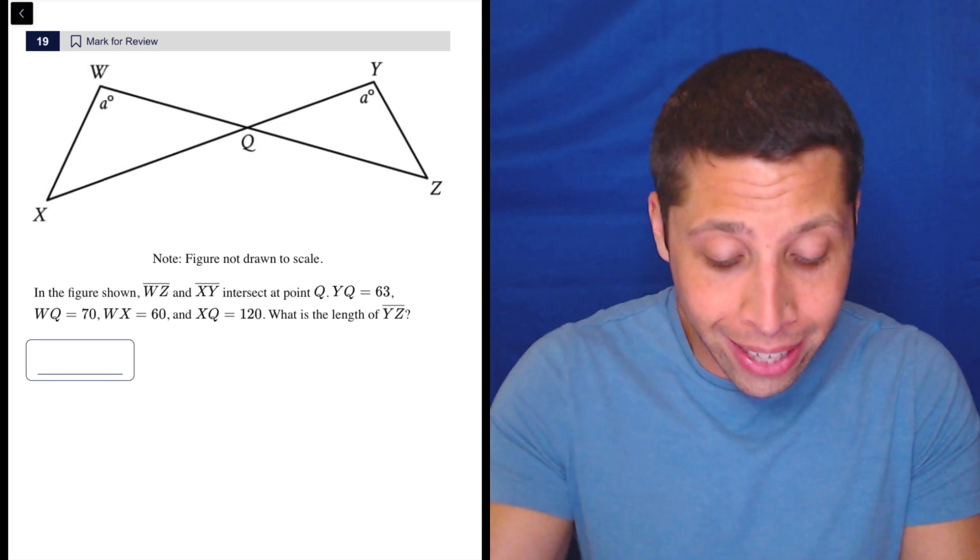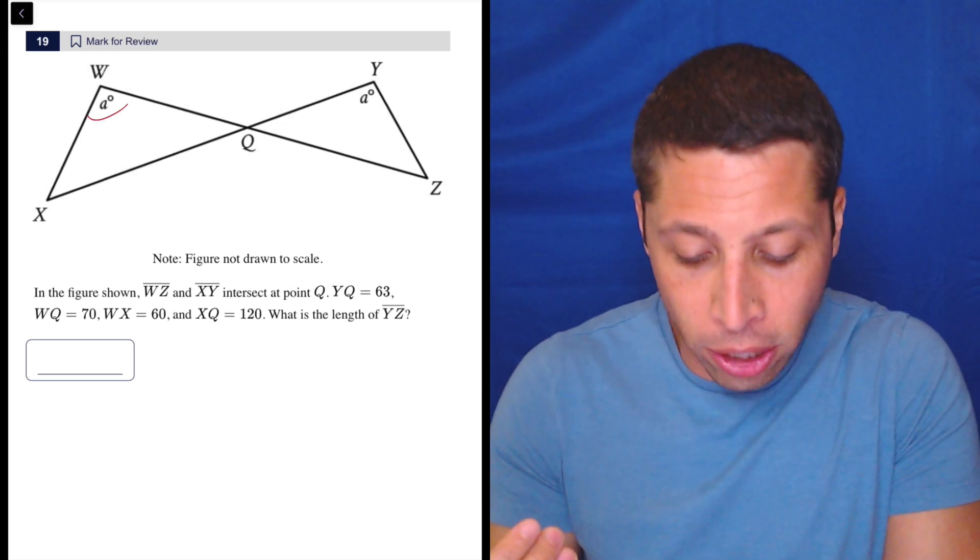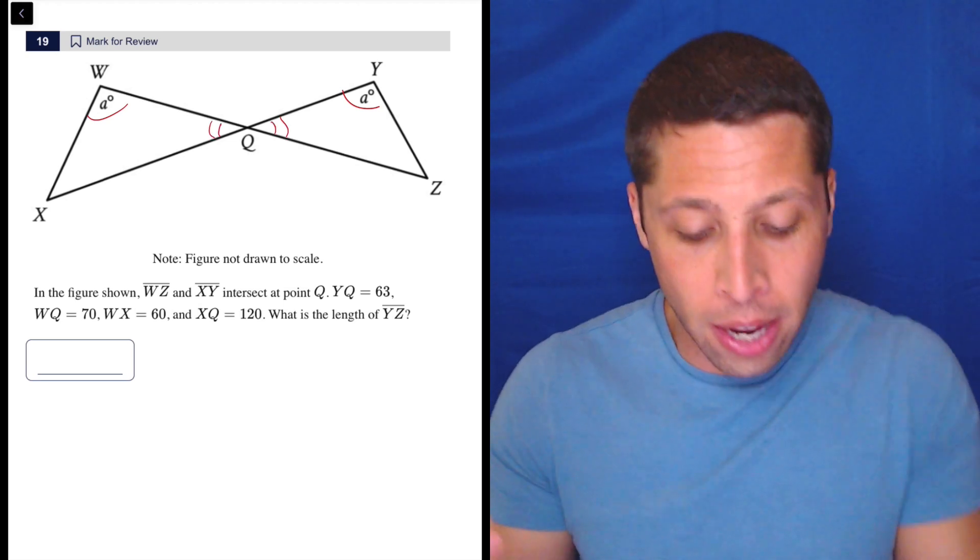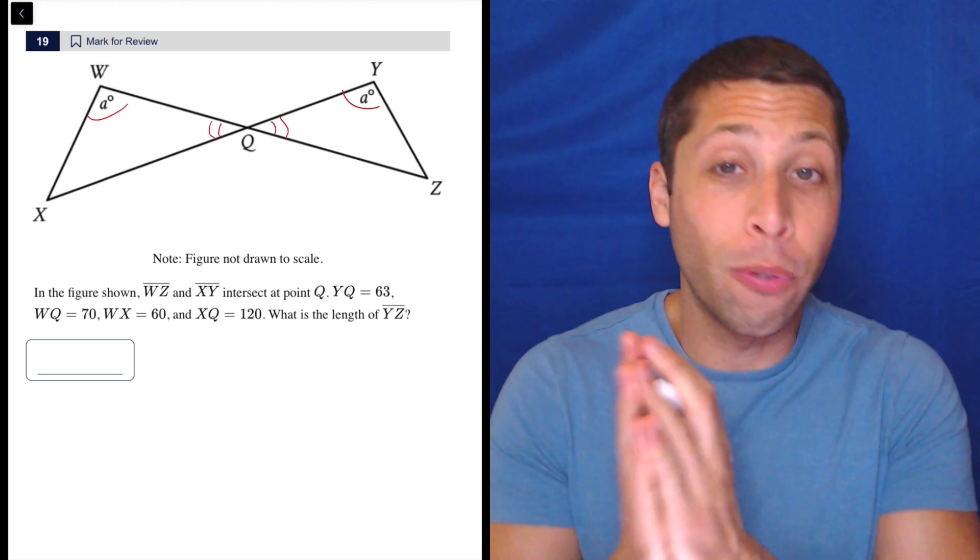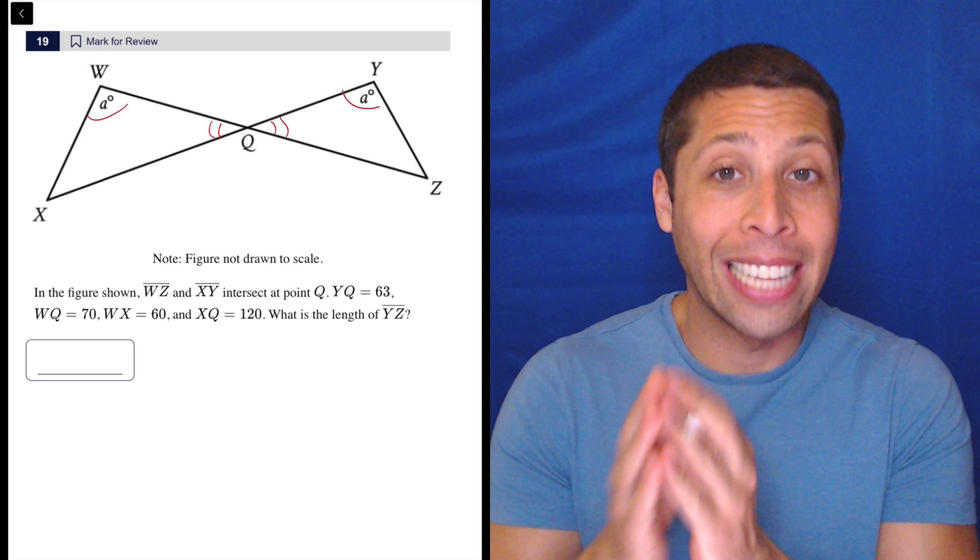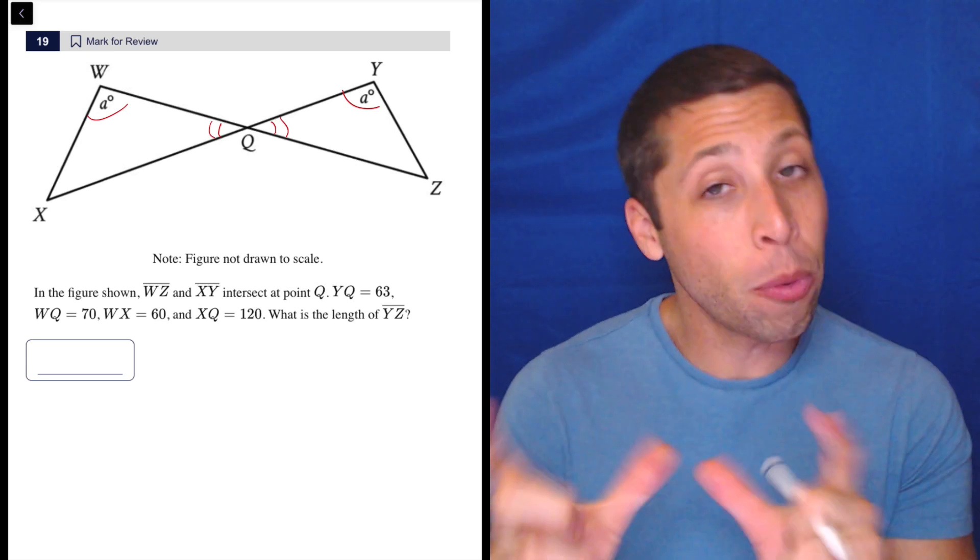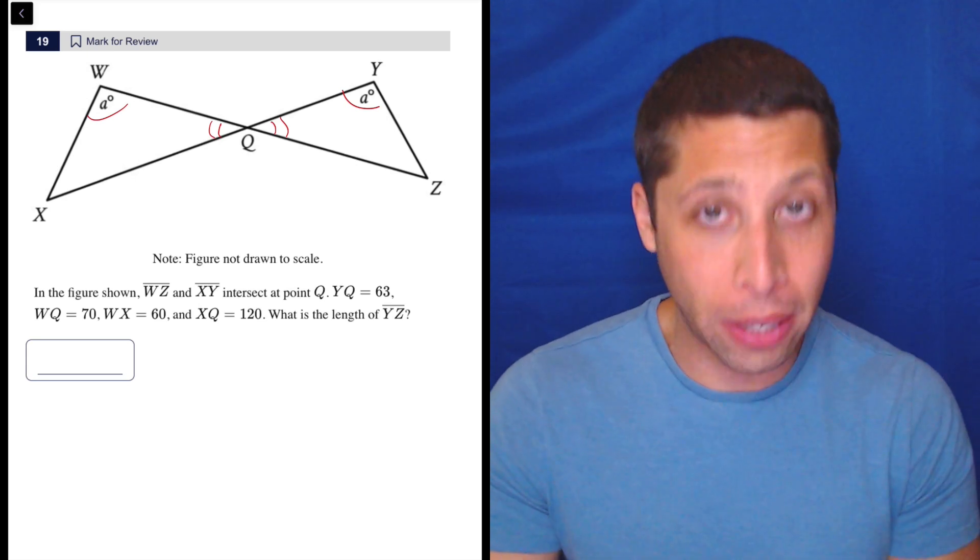The reason we can prove that is they both share two angles. They share angle A, obviously, and then because of vertical angles, they share this. So the reason we know for sure the triangles are similar is that they share two angles and that will help us eventually, but let's just start by putting things on this picture.